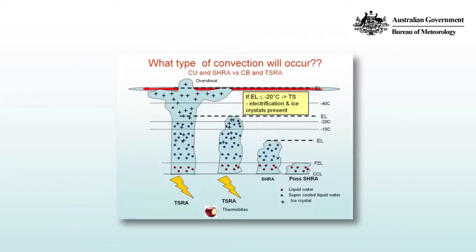In this video we'll be looking at the various types of convective systems and convective weather associated with them that are possible. You can see there are two cumulonimbus clouds here and two cumulus clouds, and what's shown is their microphysical structure — what phases of water they're made up of — and there are a number of levels indicated as well.